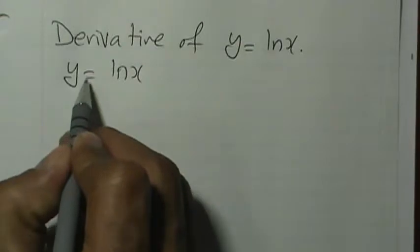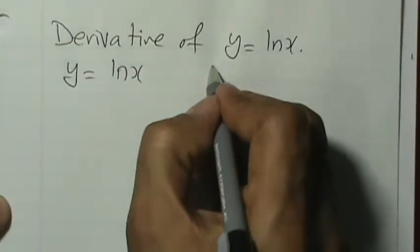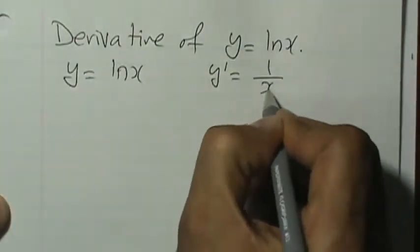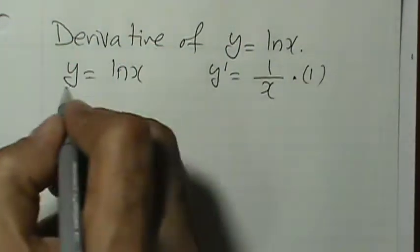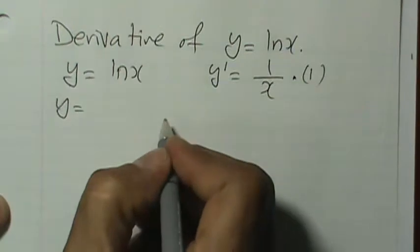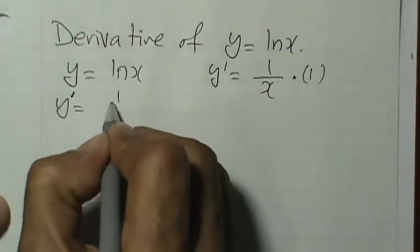To find the derivative of y equal to ln x, y prime equals 1 over x, and the derivative of x multiplied by the top which would be 1. So in simplest form, y prime equals 1 over x.